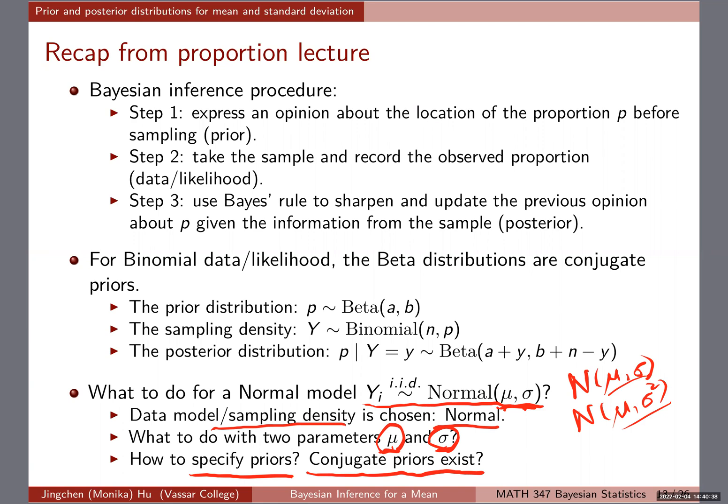Natural question: do we have conjugate priors for them so we can have the posterior distribution be the same family with different parameters? Does that exist, and if so, how can we capitalize on what we've learned already from the proportion case to make the inference much simpler?